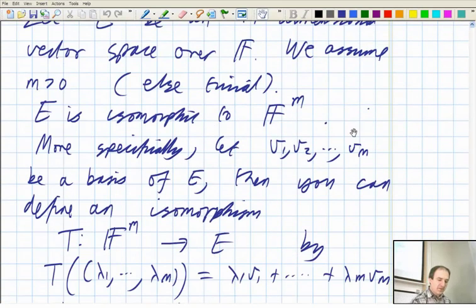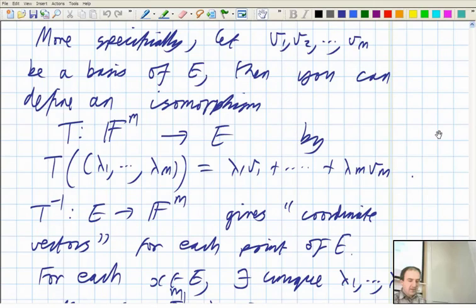And I'd reminded you that if you've got an M dimensional vector space over F, where F is either the real or the complex numbers, then it's isomorphic to F to the M in a rather specific way that you get coordinate vectors for each point of your space.